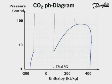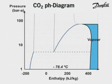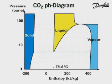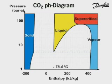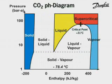For CO2 applications, this diagram has to be extended so that the solid and supercritical phases are included. The coloured areas indicate the different phases of CO2, namely vapour, liquid, solid and supercritical. The triple point is here, and the critical point is here.